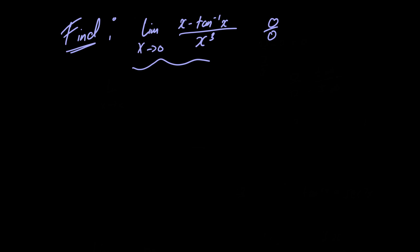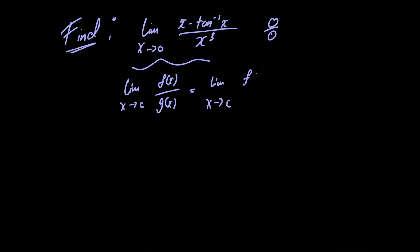L'Hôpital's Rule basically says that if we have a limit as x approaches c of a function f of x divided by another function g of x, this is equal to the limit as x approaches c of the derivative of f of x divided by the derivative of g of x,